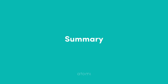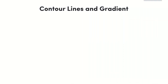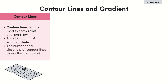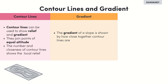Alright, that's it for this lesson — time to summarize. In this lesson we looked at how we show relief and gradient on topographic maps using contour lines. These join points of equal altitude. Just looking at the number and closeness of contour lines will tell us the local relief.